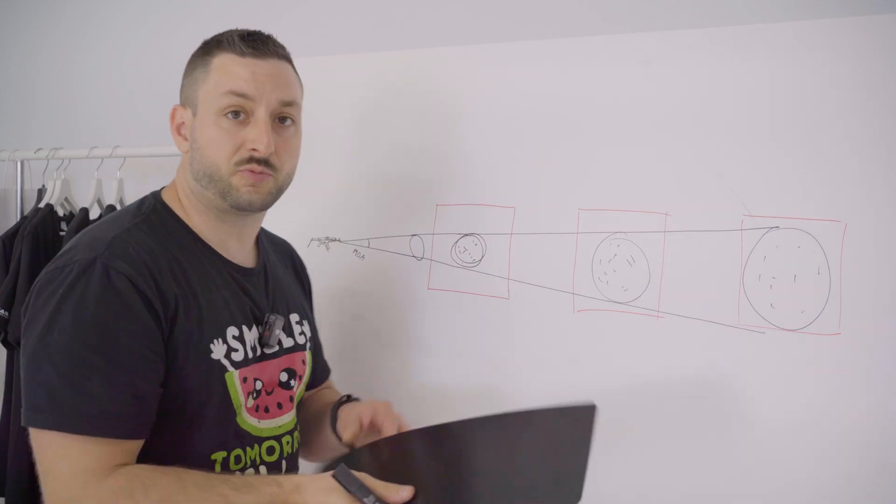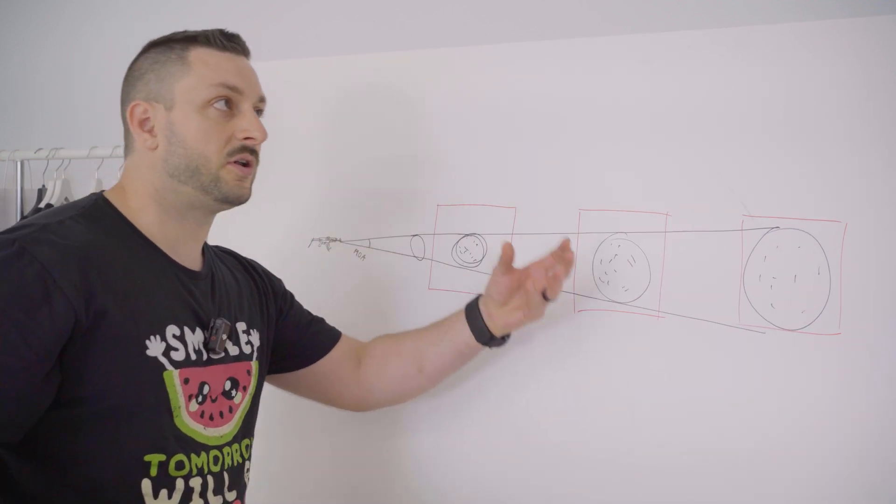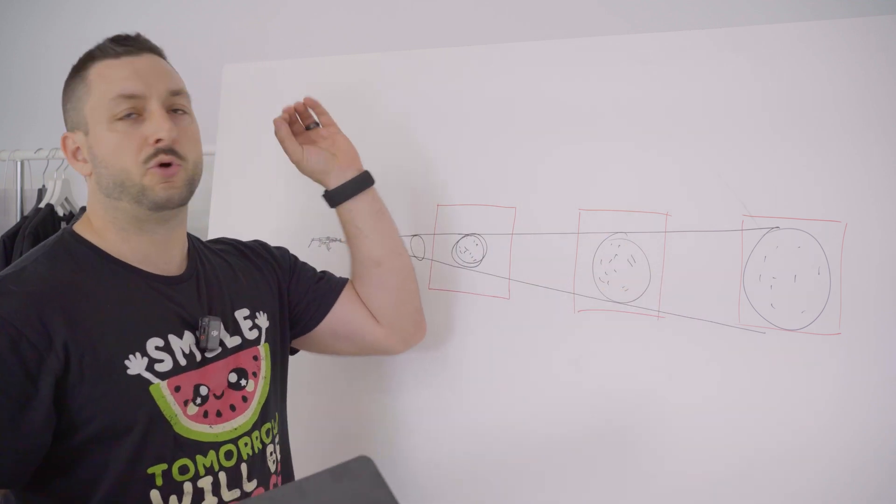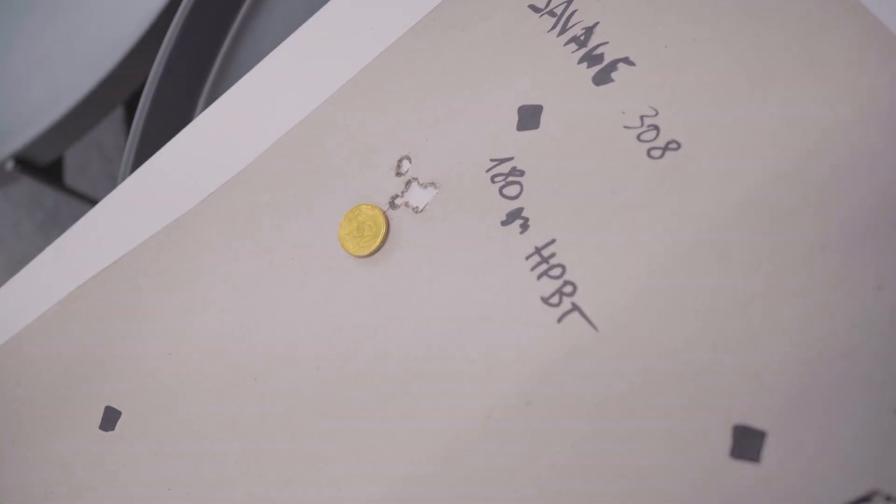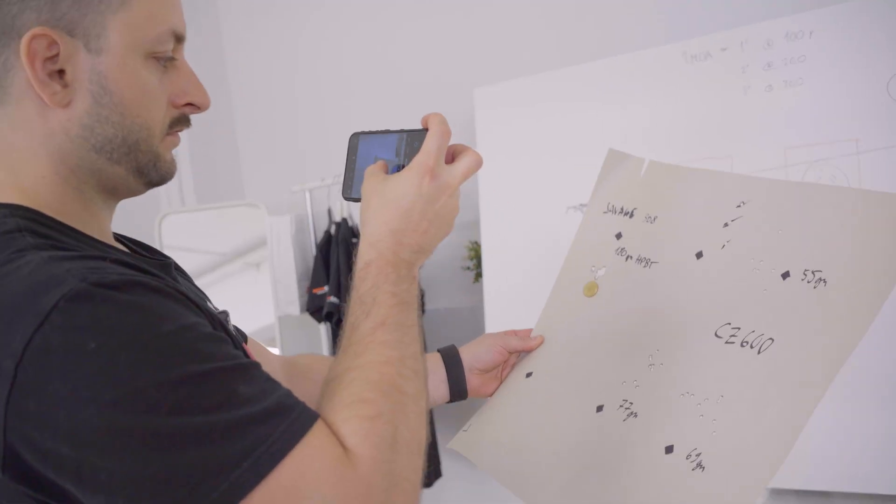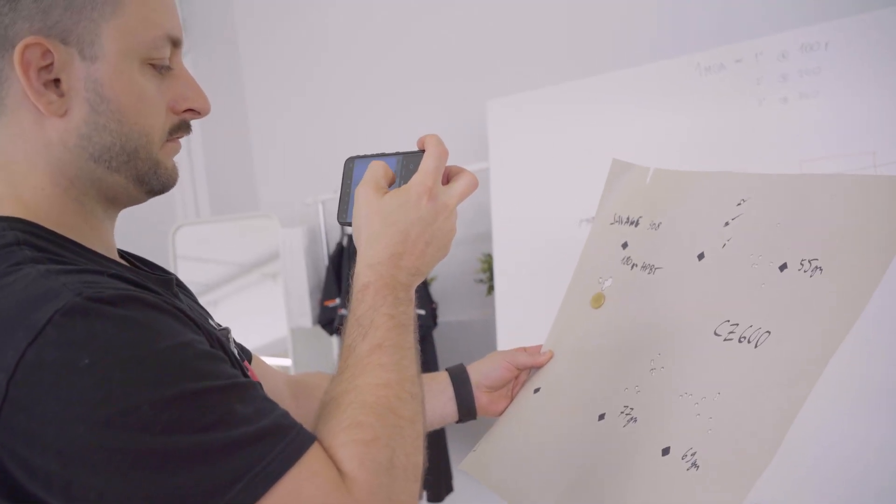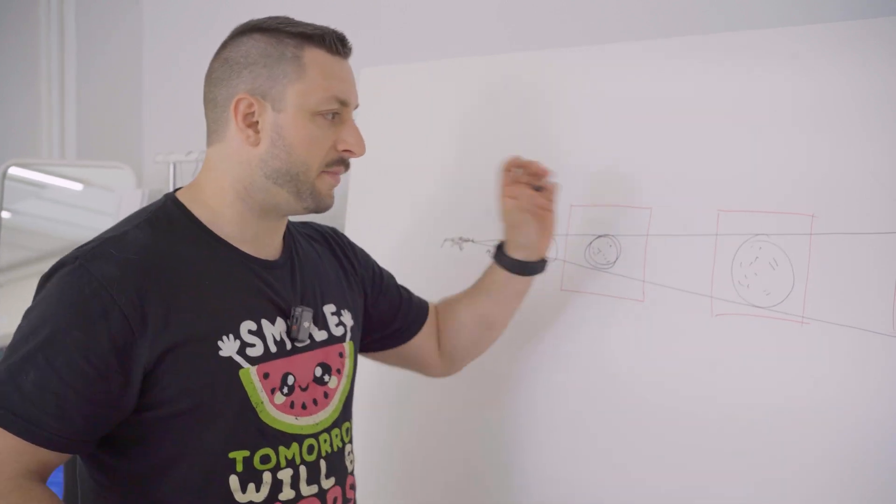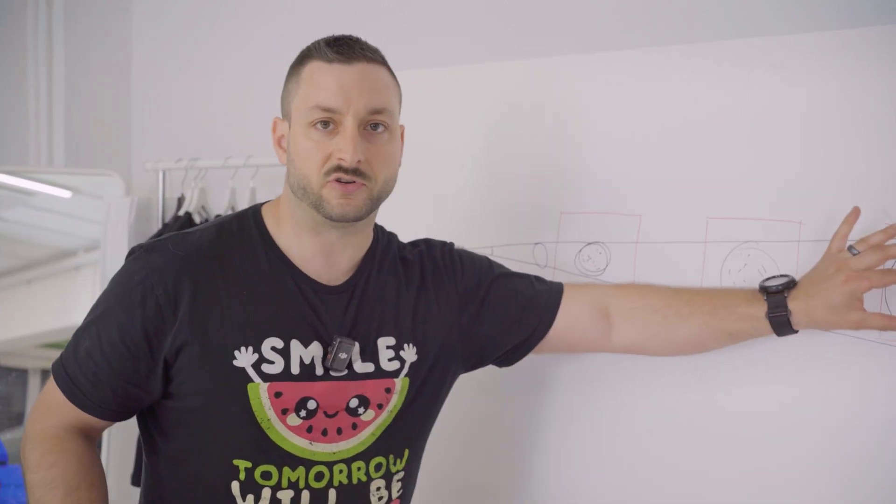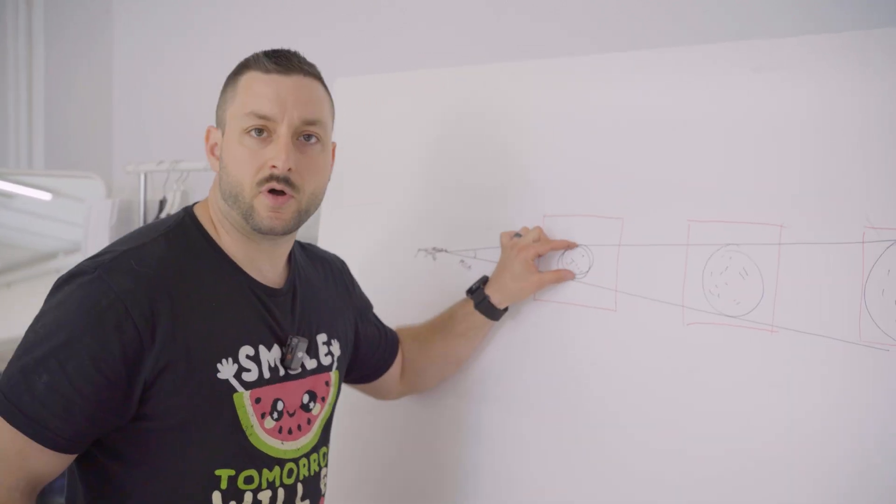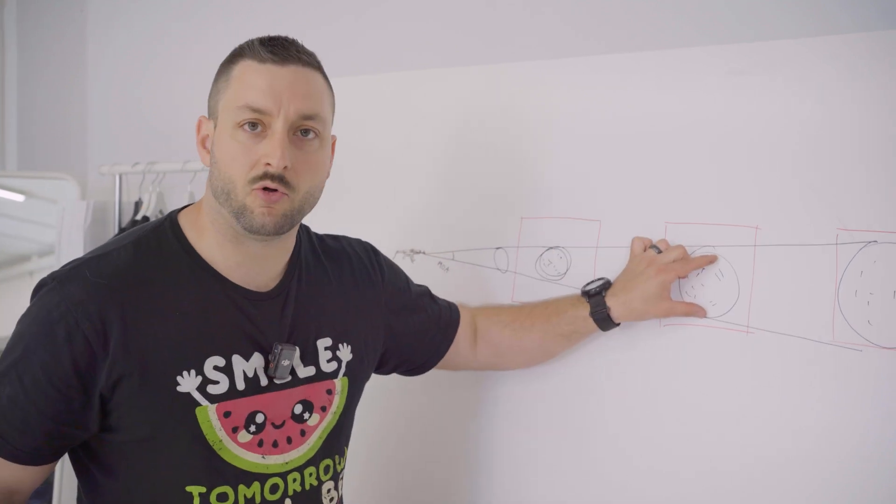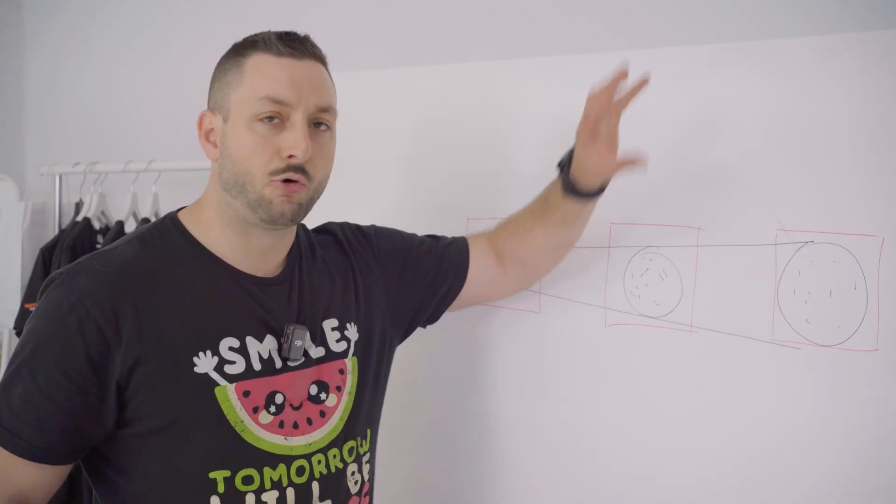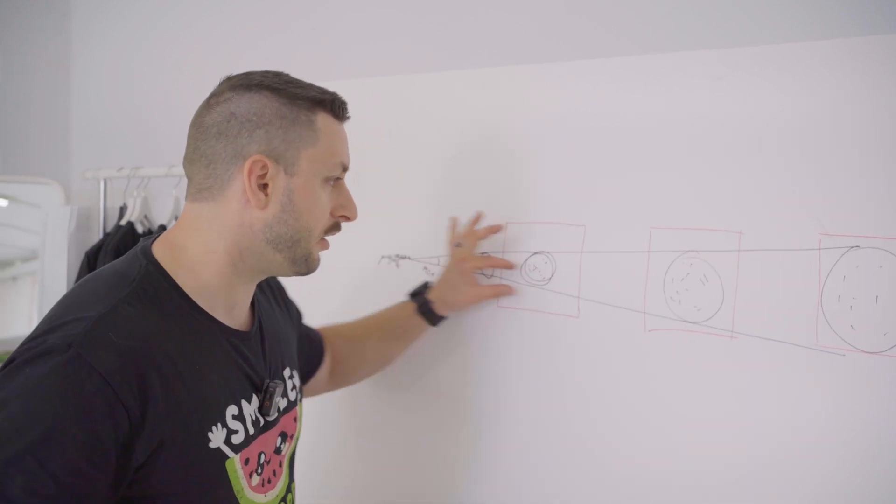This actually goes pretty linear to a certain distance because then you're limited with bullets going to transonic range. Then on larger distances you have outside influence like wind and also drop of the bullet. But accuracy is very linear, so if this is one MOA, this will be one MOA also at 200 meters, one MOA at 300 meters. Just the grouping will be bigger but the angle stays the same.